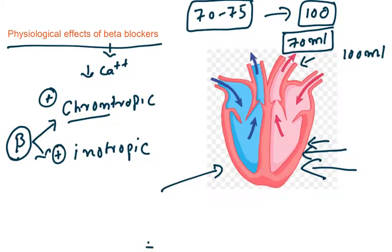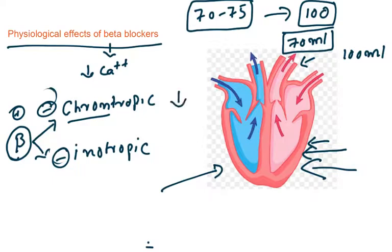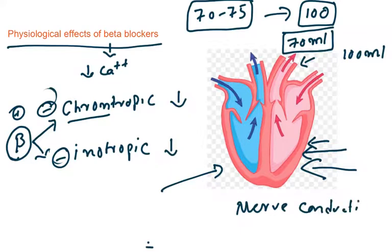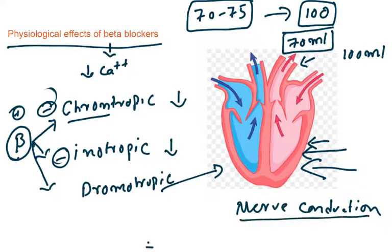Beta blockers block the effects of beta receptors, so instead of positive effects you get negative effects: negative inotropy and negative chronotropy — heart rate and force of contraction are both reduced. Additionally, calcium is required for nerve conduction. Beta receptor activation also produces a positive dromotropic effect — increased nerve conduction. When you block this receptor, conduction is also reduced.